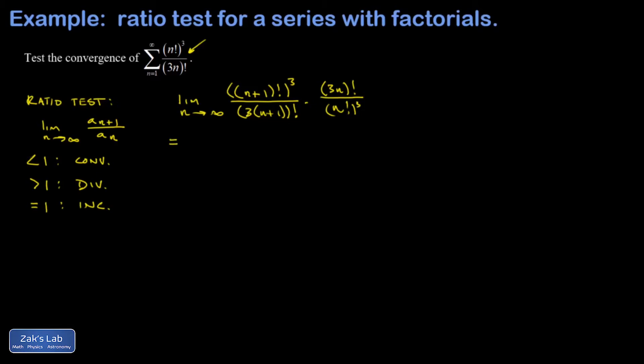The trick to these problems is always to split things off of the factorials and then look for things to cancel. For example, in the first term, (n+1)! is (n+1) times n factorial, but I still have to cube that thing. In the denominator, if I distribute the 3, I have a (3n+3) factorial.